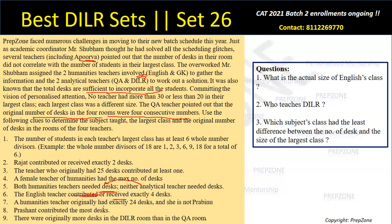Hint seven: a humanities teacher originally had exactly 24 desks and she is not Prabeenu. By the way, Prabeenu is our VARC ma'am. The humanities teacher with 24 desks is female, and the female humanities teacher with the maximum desks — since 24 is not the maximum — means Prabeenu must have the higher desk count.